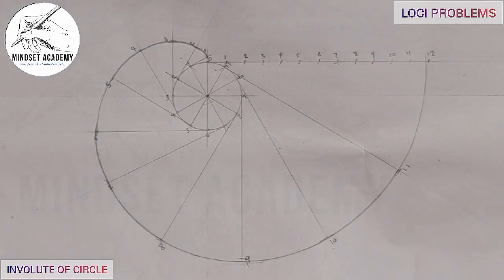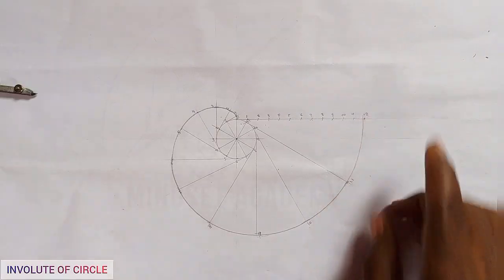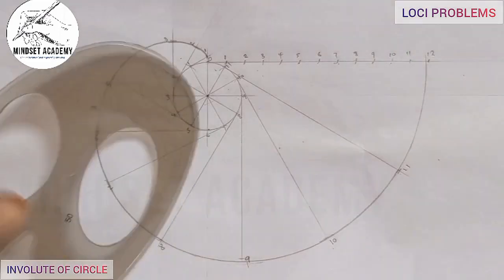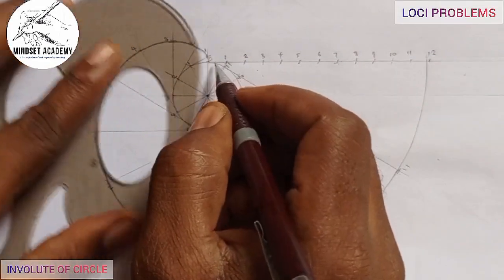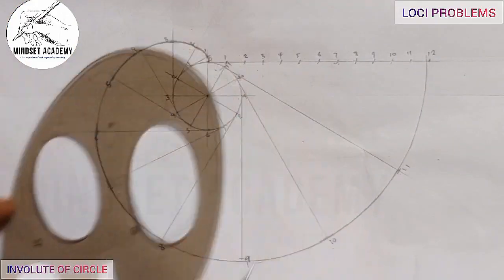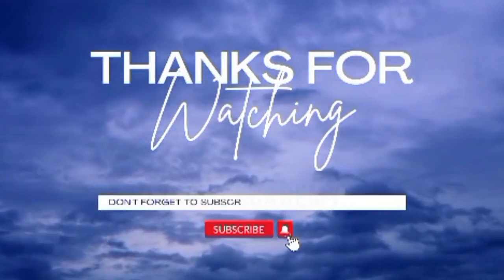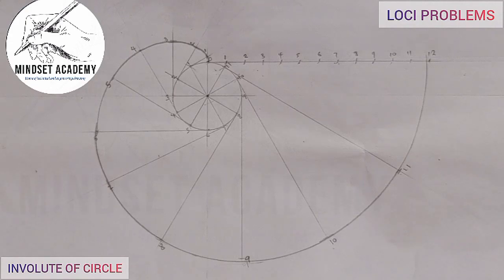This is the envelope — that is one way of doing it using your compass. You can also click the link for the involute of a triangle. Or if you don't want to use your compass, you can use your French curve and start joining those points together, starting from point zero. If you found this video helpful, please don't forget to subscribe, like, and share. Thanks for watching.